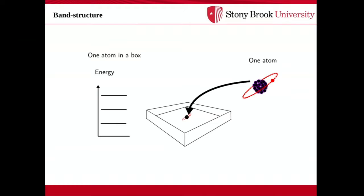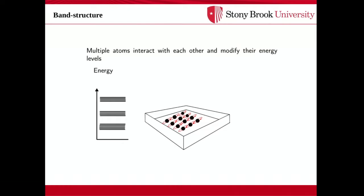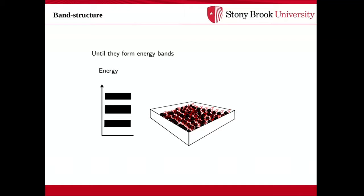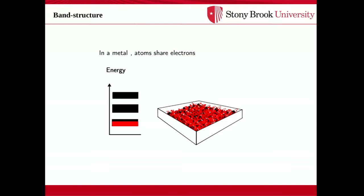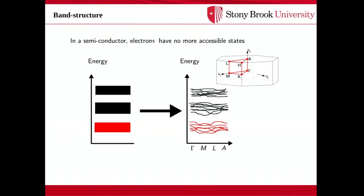Another concept is band structure. For the hydrogen atom, energy levels are discretized: minus 13.6 electron volts divided by n squared. Similarly, for an atom in a box, energy levels are discretized. If one puts more atoms, there will be more levels and they will interact. If one puts a lot of atoms forming a crystal, the energy levels will be continuous. In a metal, occupied levels are right next to each other in energy, so with a tiny bit of energy, electrons can occupy higher levels — that's why metals conduct electricity. In semiconductors, there is a gap between occupied and unoccupied energies, so in principle they don't conduct, but with some energy they will.